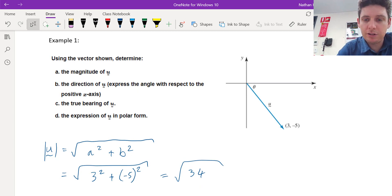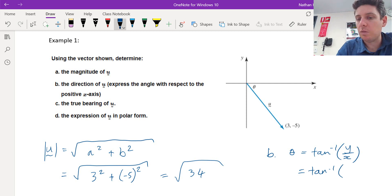Alright, the second one. We want a direction of u. So we can use theta equals tan negative 1, b over a. You can also write it as, instead of b over a, you could write y over x. Either is fine. So we simply sub in the y value, negative 5, and the x value, 3.